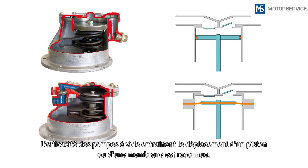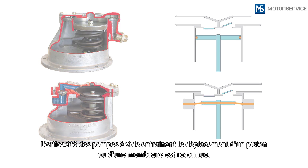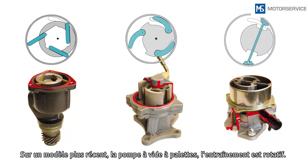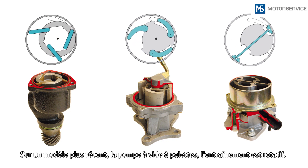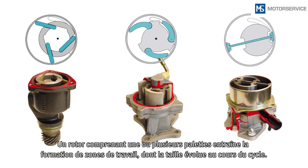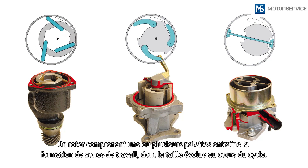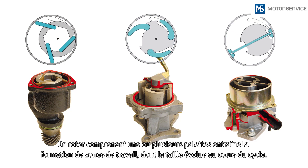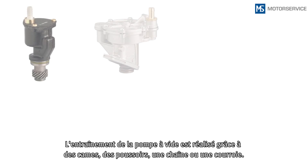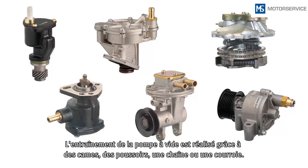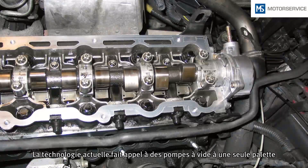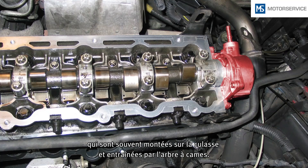Vacuum pumps that move a piston or diaphragm back and forth have long proven their worth in the field. A more recent development is vane vacuum pumps with rotary drive. Here, a rotor with one or more vanes forms compartments, the size of which varies during the work cycle. Vacuum pumps can be driven by means of cams, tappets, chains, belts or cam discs. Single vane vacuum pumps constitute the lightest technology and in many cases are installed on the cylinder head and driven by the camshaft.